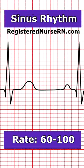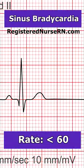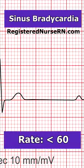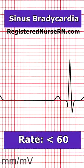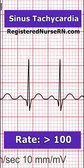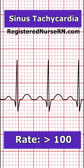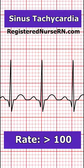It has a rate between 60 to 100. Then there's sinus bradycardia, and here's what it looks like, and it has a rate less than 60, followed by sinus tachycardia, which has a rate greater than 100.